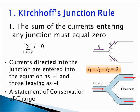Kirchhoff's junction rule applies to any point with three or more connections. This rule states that the sum of the currents entering any junction must equal zero. Currents directed into the junction are entered with a plus sign and those leaving with a minus sign. The charge that enters the junction per unit time must equal the charge that goes out, so the junction rule reflects conservation of charge.